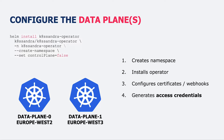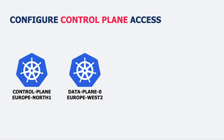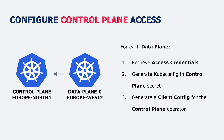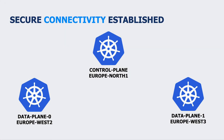Next we configure access for the control plane to communicate with the data planes. The access credentials generated in the previous step are retrieved, a kubeconfig is generated from them, and it is stored in the control plane as a secret. We also create something called a ClientConfig, which maps those kubeconfig secrets into actual Kubernetes clients that we utilize from the control plane. With that done, we have secure connectivity between the operator in the control plane and the Kubernetes API servers in the data planes.